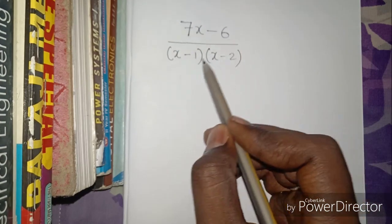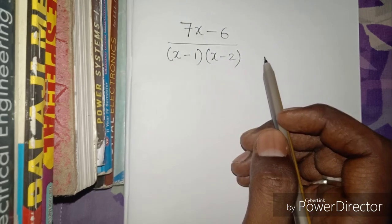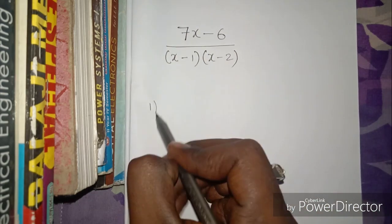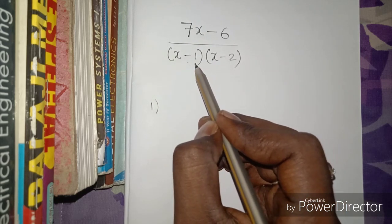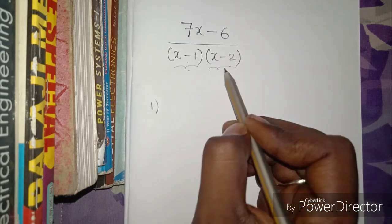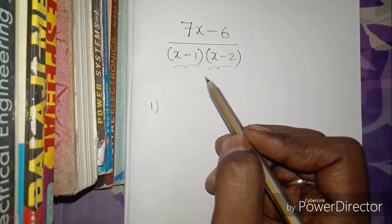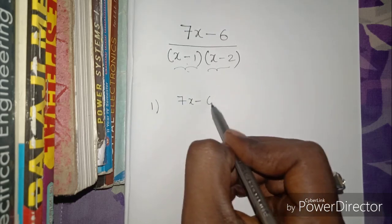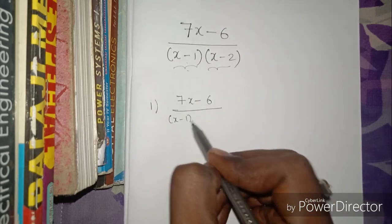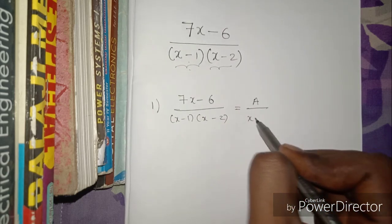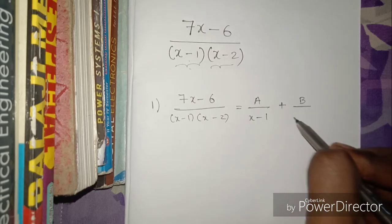First question: (7x - 6) / [(x - 1)(x - 2)]. Very simple. First step — observe the denominators. We have two terms in the denominator. So we split the fraction: (7x - 6) / [(x - 1)(x - 2)] = A/(x - 1) + B/(x - 2).